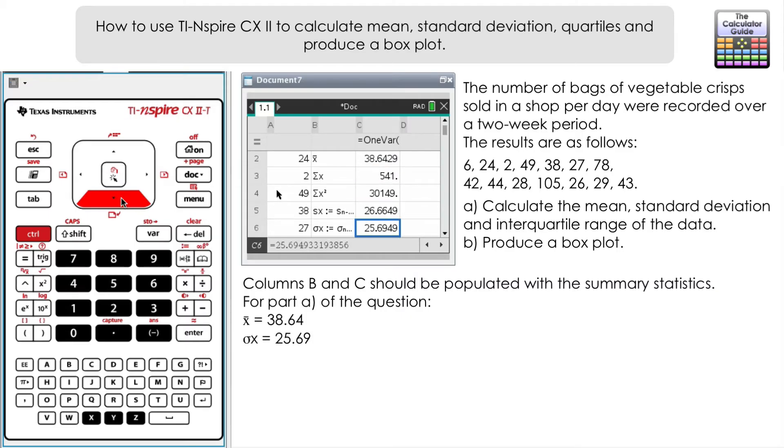We've got some other summary stats here. We also want the standard deviation. We've got the sample deviation here, sx, and we've also got the standard deviation σx. We're going to go for σx in this case, so 25.69 to two decimal places.